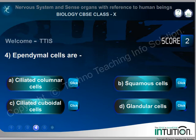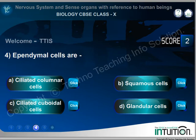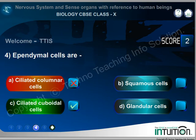Ependymal cells are: A. Ciliated columnar cells, B. Squamous cells, C. Ciliated cuboidal cells, D. Glandular cells. Wrong answer: D. Glandular cells. Right answer is C. Ciliated cuboidal cells.